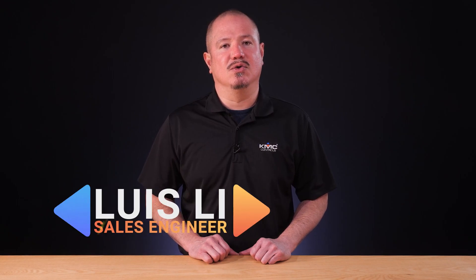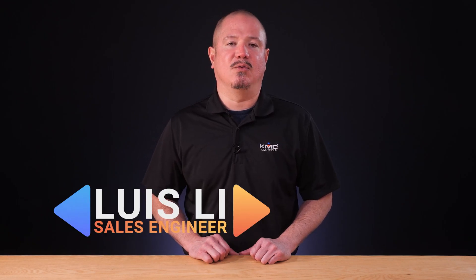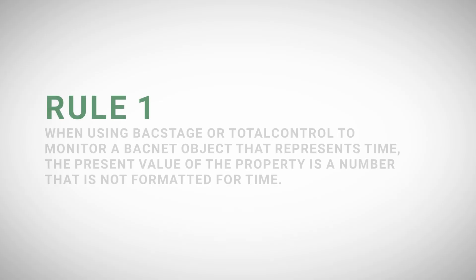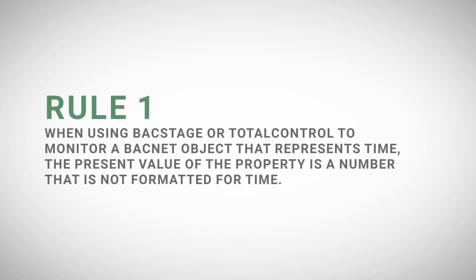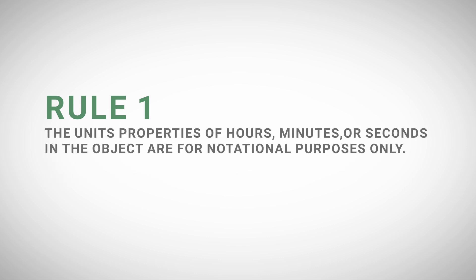When working with time in BACnet controllers, there are just three rules to keep in mind for evaluating and writing Control Basic programs. Rule one: when using Total Control to monitor a BACnet object that represents time, the present value of the property is a number that is not formatted for time. The unit's properties of hours, minutes, or seconds in the object are for notational purposes only.